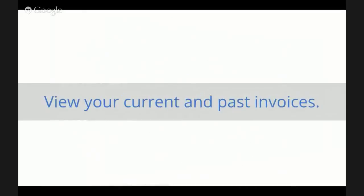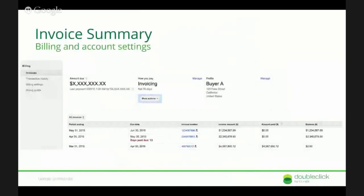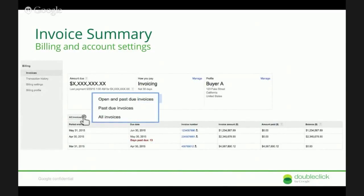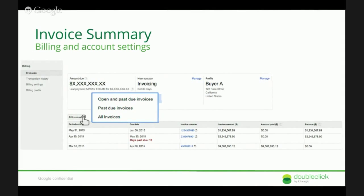If you keep going, there's a filter labeled as All Invoices by default. But if you click on that, you'll be able to see your older invoices — open and paid invoices can be filtered — and we'll show you the specific invoices corresponding to those.